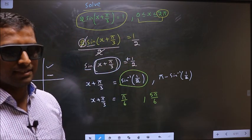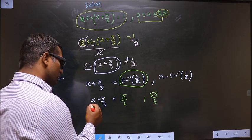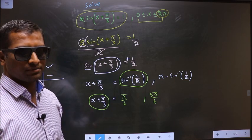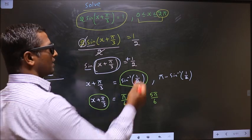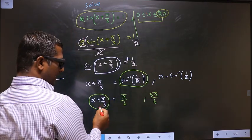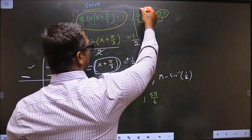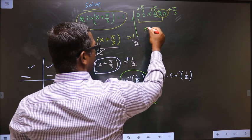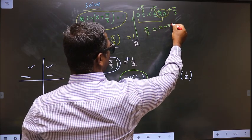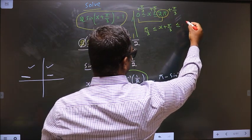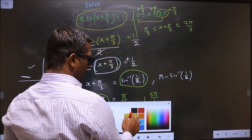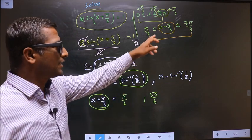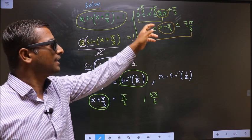Now the question arises: in what interval should the values for x + π/3 lie, and shall I find more values or not? To answer that, since x lies in [0, 2π], we add π/3 throughout to get the interval for x + π/3. So we get π/3 ≤ x + π/3 ≤ 2π + π/3, which is 7π/3. The values for x + π/3 should lie in this interval, and when this happens the values for x will automatically lie in [0, 2π].